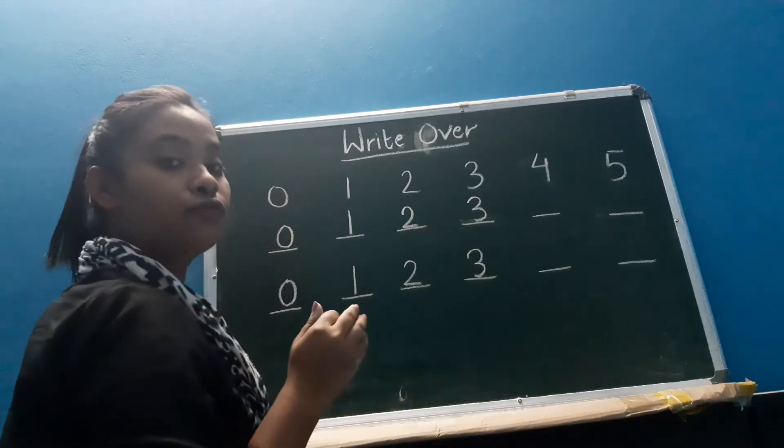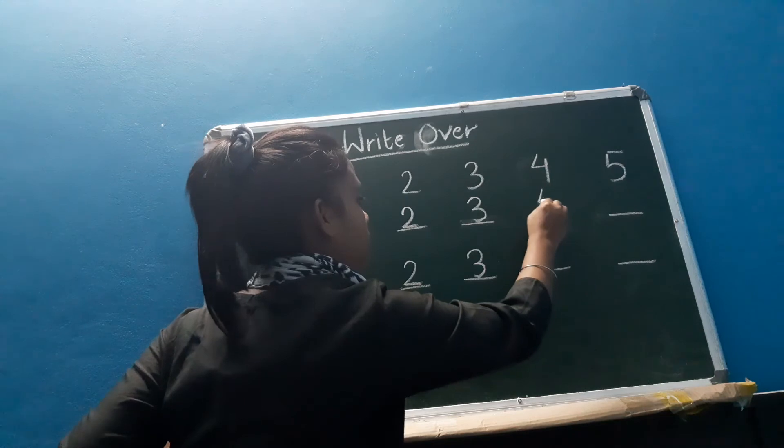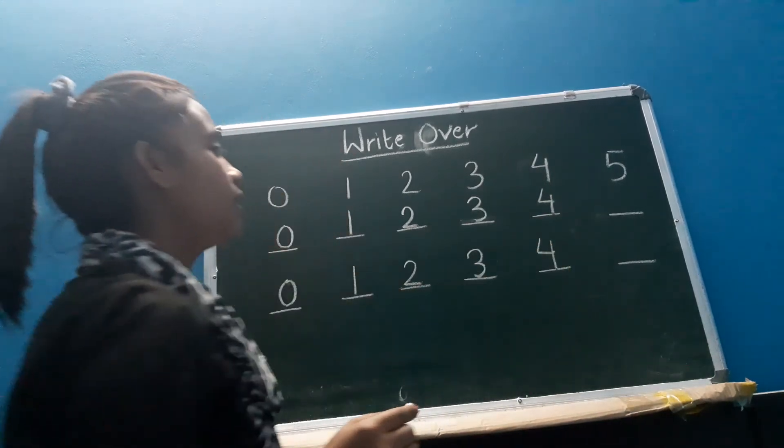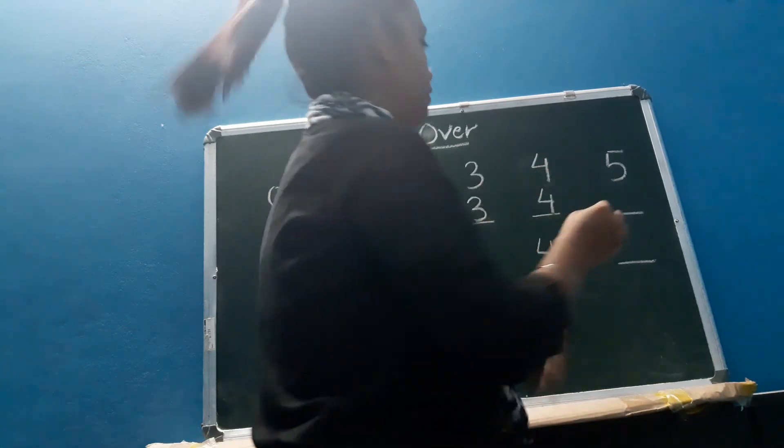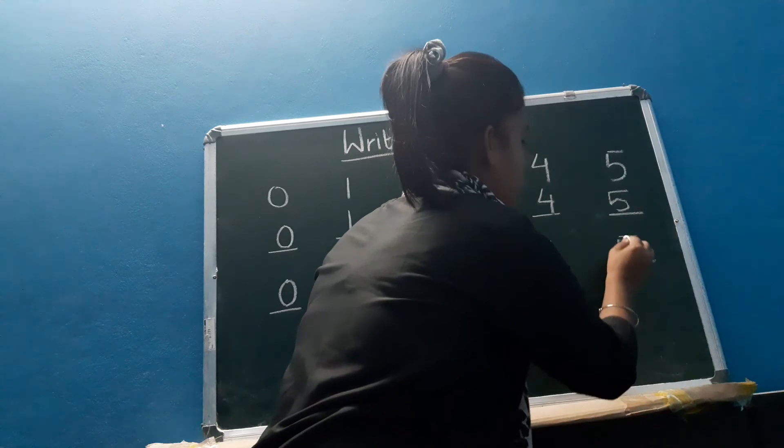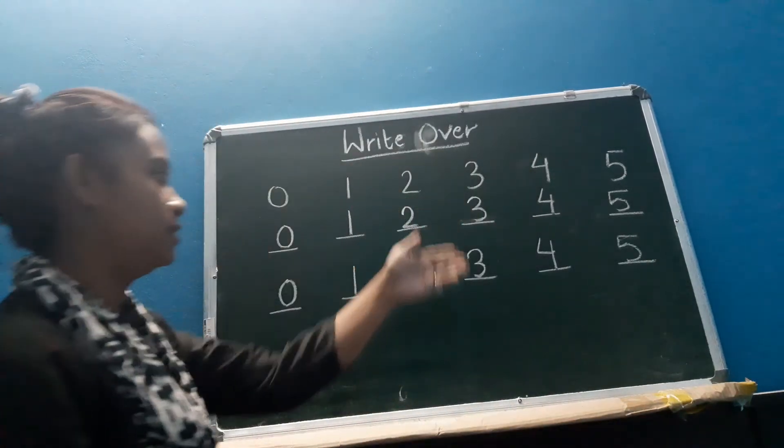Okay, now next is number 4. So you have to write here 4. Alright, and the last one is number 5. So you have to write here 5. Alright, you have to write like this.